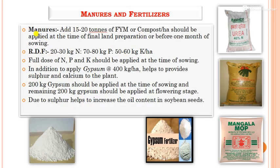For nutrient management, 15 to 20 tons of farmyard manure or compost per hectare should be applied at final land preparation or one month before sowing. The recommended fertilizer dose is 20 to 30 kg nitrogen, 70 to 80 kg phosphorus, and 50 to 60 kg potassium per hectare at sowing. Additionally, gypsum at 400 kg per hectare should be applied to provide sulfur and calcium; 200 kg at sowing and 200 kg at flowering, as sulfur increases oil content and calcium increases seed weight and size.